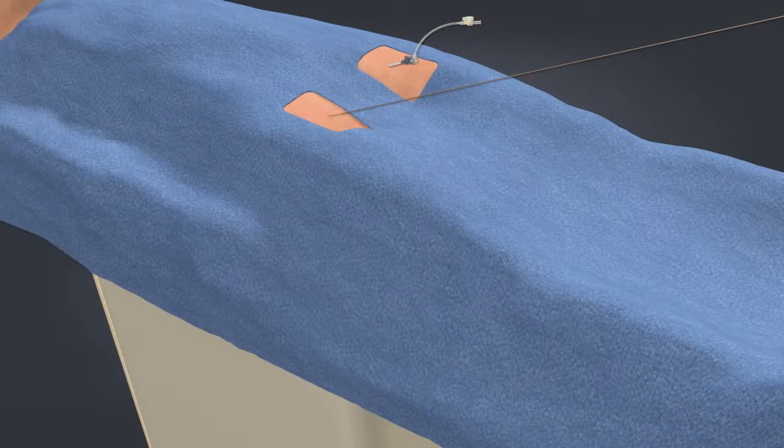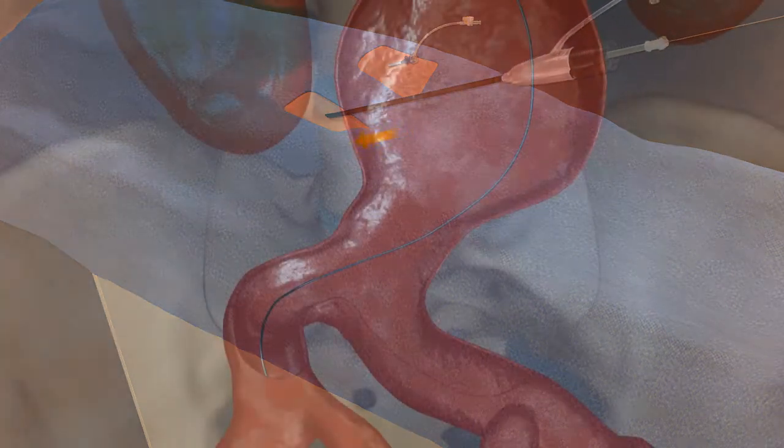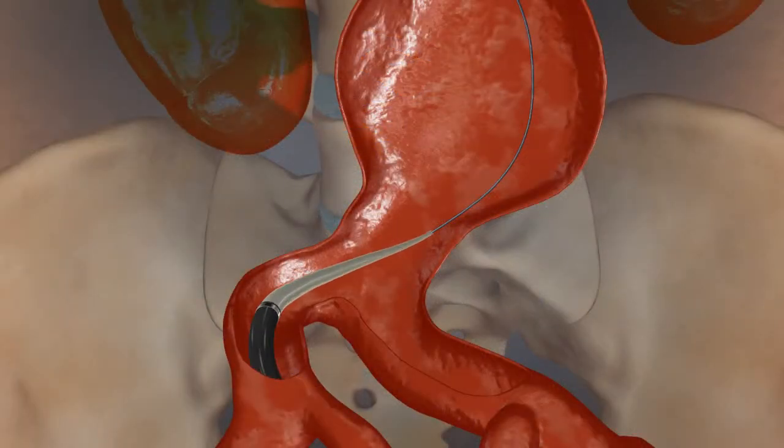On the ipsilateral side, place the 17-French AFX introducer sheath over the guide wire and advance through the arteriotomy and up to the aortic bifurcation.